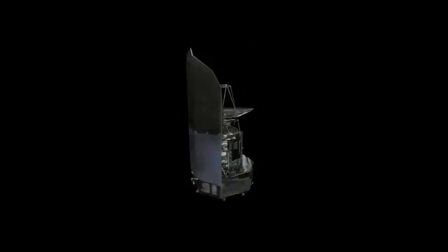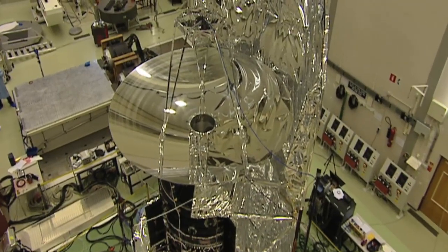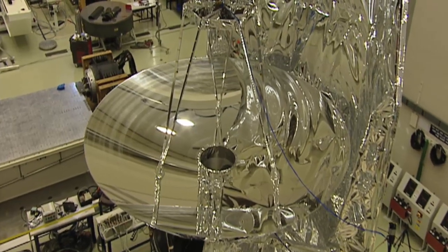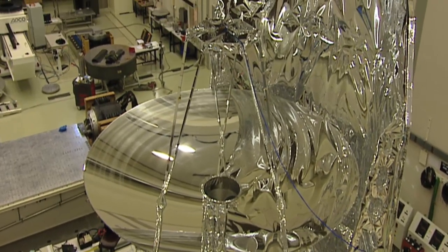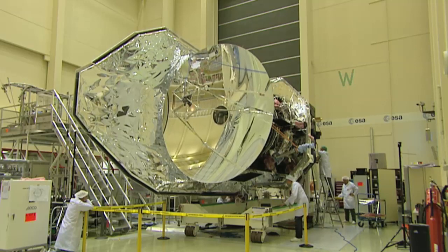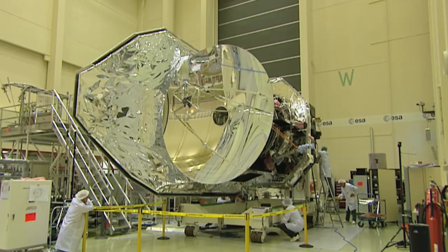Herschel's primary mirror is more than four times larger than any previous infrared space telescope and can collect almost 20 times as much radiation. The mirror is so perfect that irregularities on its surface are less than a thousandth of a millimeter high.